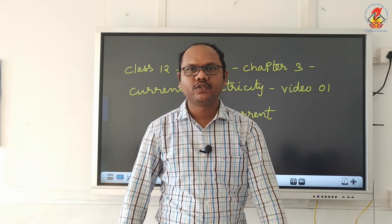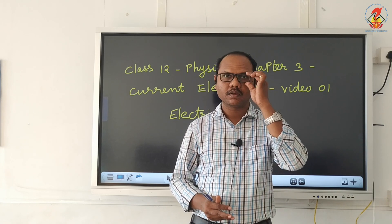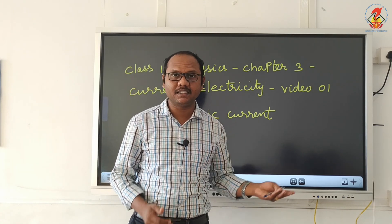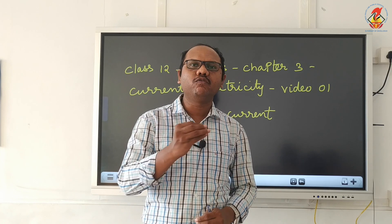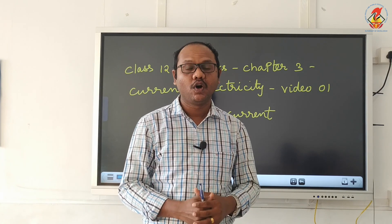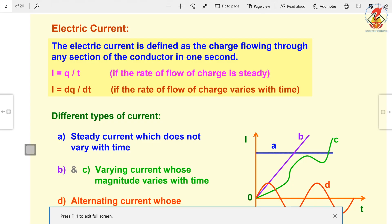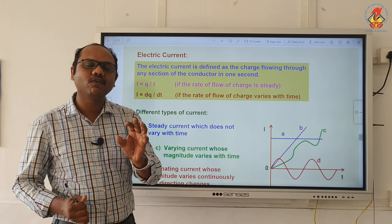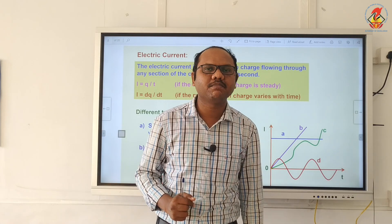Good morning students, today we are going to start a new chapter: current electricity. What is meant by electric current? We have already studied in chapter 10 that electric current is the rate of flow of electric charges — how much charge is moving per unit time. Electric current is defined as the charge flowing through any section of the conductor in 1 second. So we can say I is equal to Q by t, if the charge flow is steady.